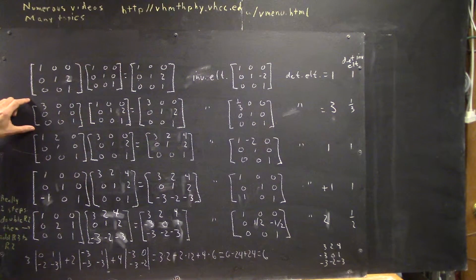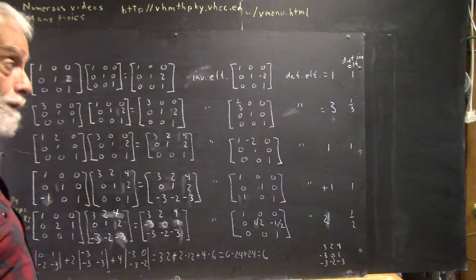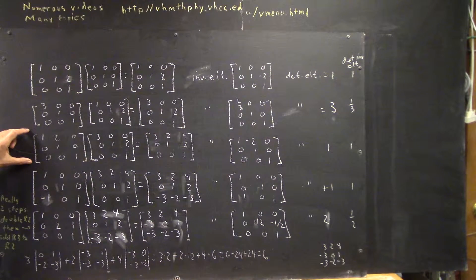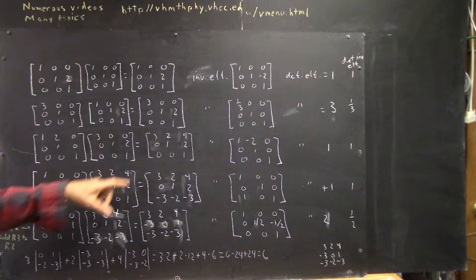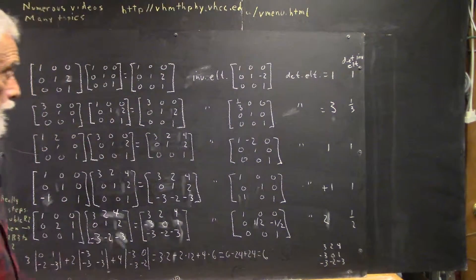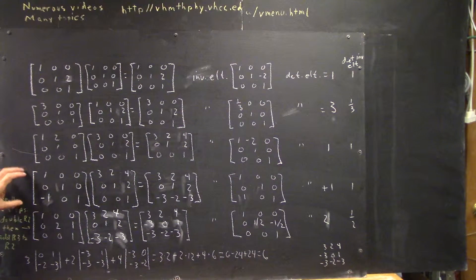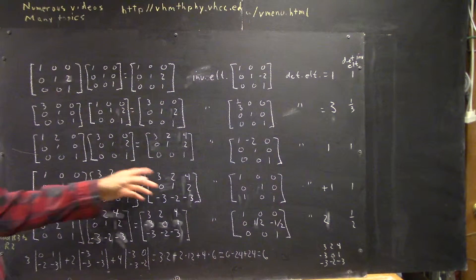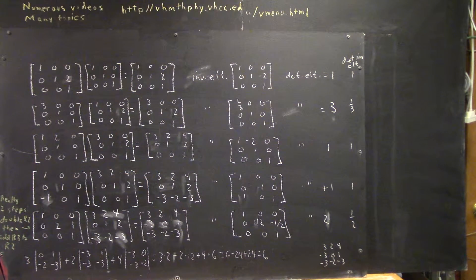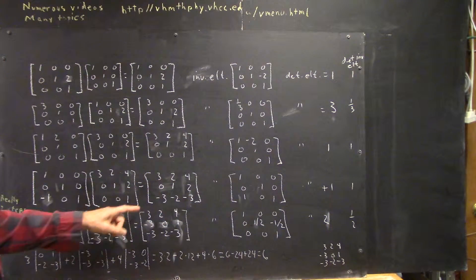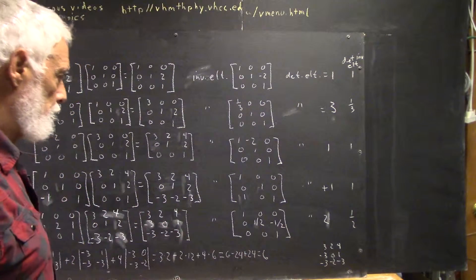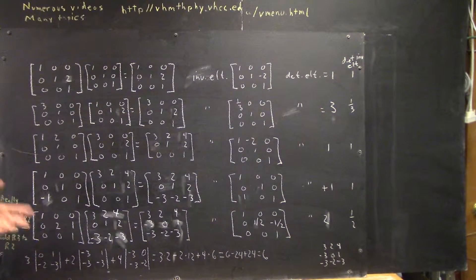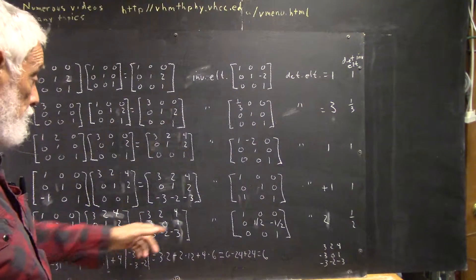Then we multiply by this elementary matrix which has determinant 3, and the determinant of our result, we can verify, is 3. Then we multiply by this matrix whose determinant is 1 and get this upper triangular matrix, so its determinant is the product of the diagonal elements, which is 1. Then we multiply by this matrix — I said determinant 1 but it's actually 3; multiply the diagonal elements. Now we're no longer upper triangular so the determinant takes a little more work, but the determinant is still 3. When we get down here, the determinant is multiplied by 2 because this matrix still has determinant 2, and we double the determinant of the previous result.